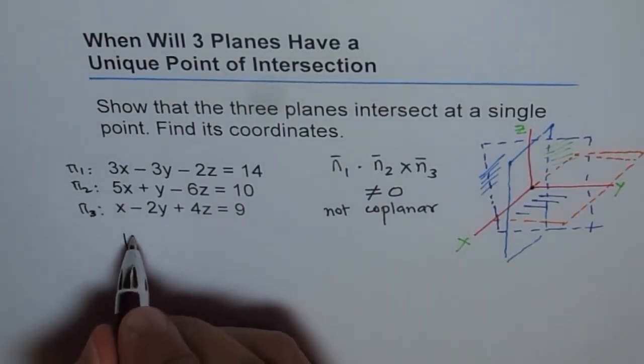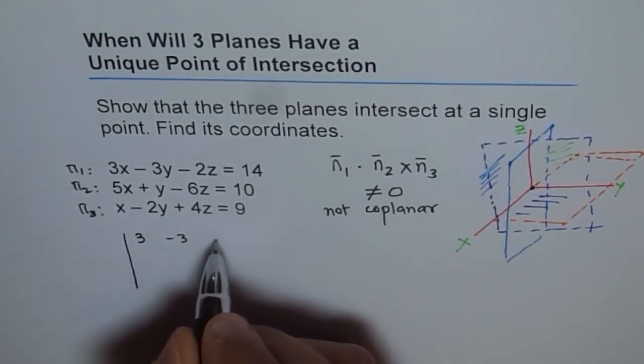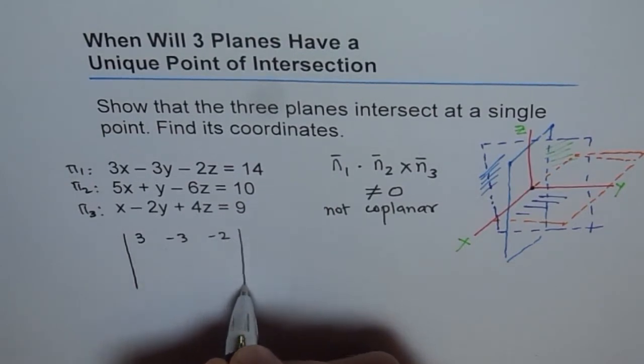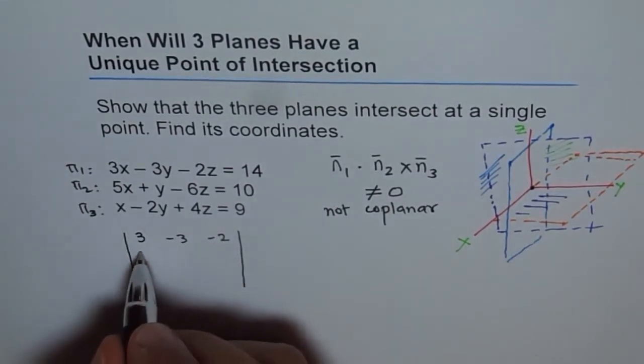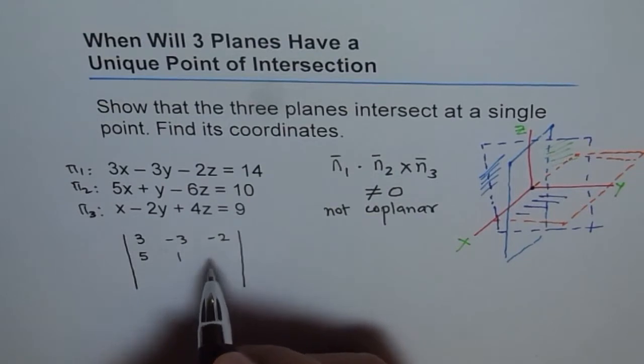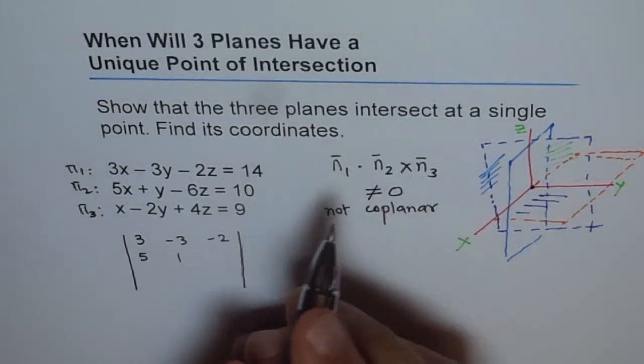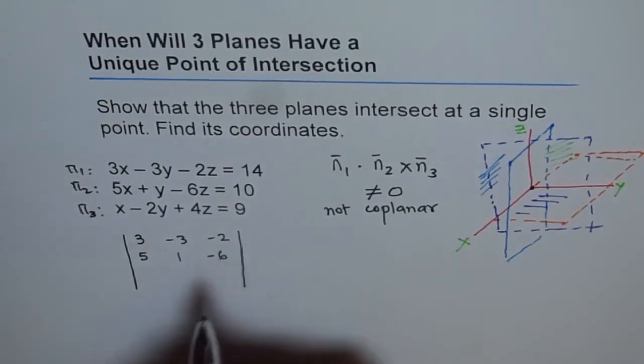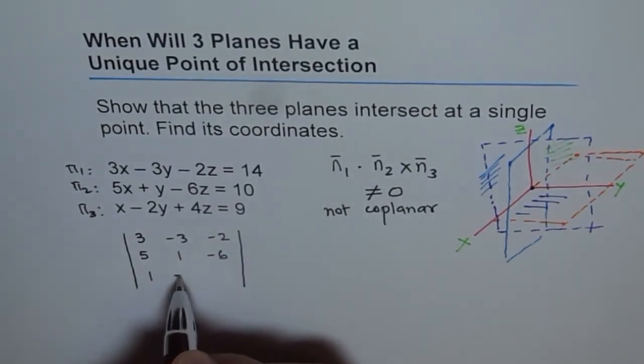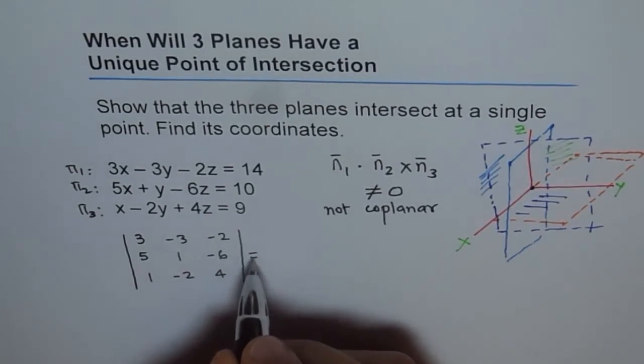So in that case we can find the scalar triple product, which will be 3, minus 3, minus 2. I am using matrix, you can use any method to find this. So basically we are finding n1 dot n2 cross n3. Minus 6, 1, minus 2 and 4.